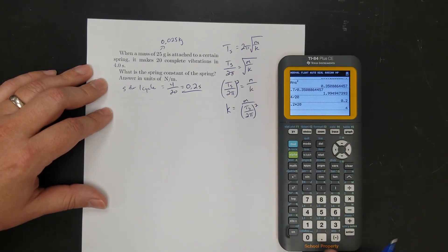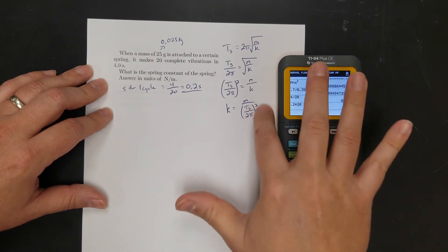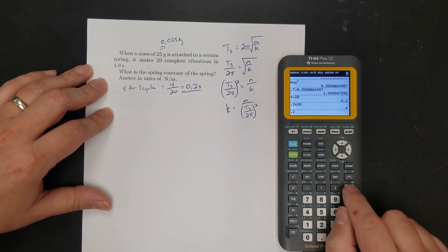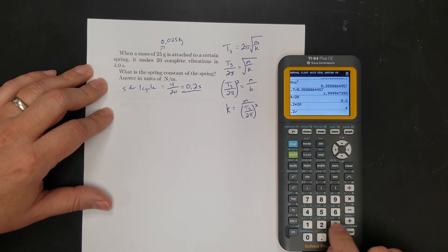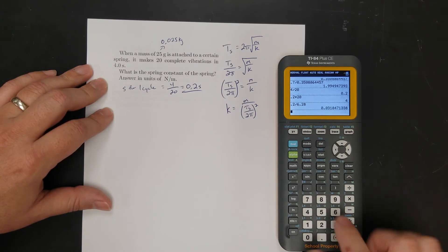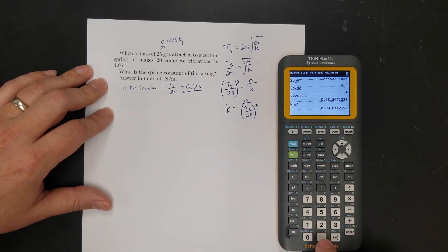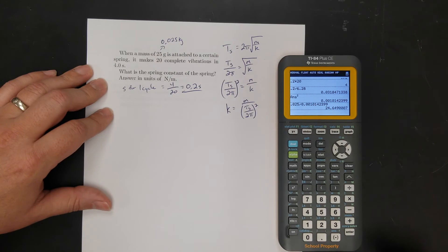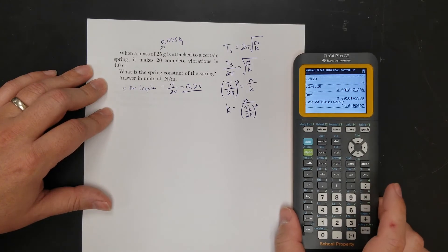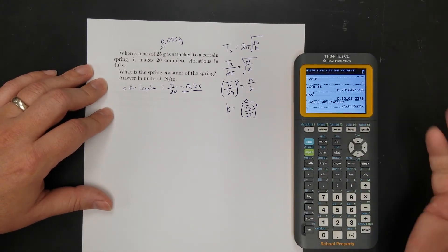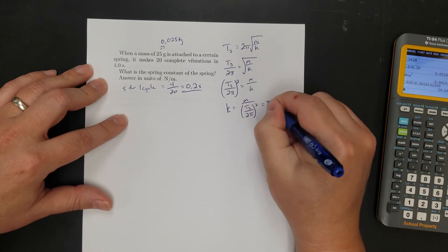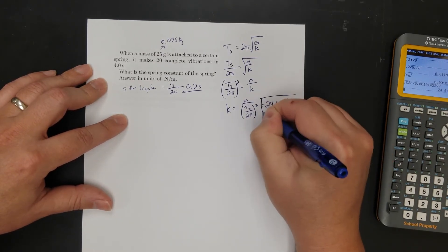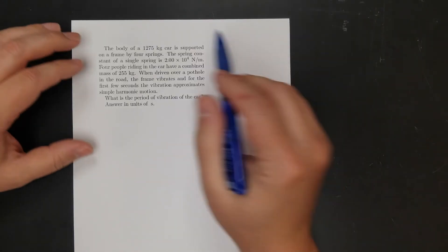And so now let's solve. So k equals, so I'm going to do the inside of here first. My period is 0.2 divided by 6.28. Square it. Mass 0.025 divided by that. And then hit enter. And that's my spring constant, 24 point, we'll call it 24.65. 24.65 newtons per meter.